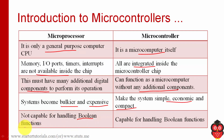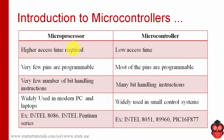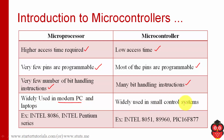Microprocessors are generally not capable of handling Boolean functions, whereas microcontrollers are capable of handling Boolean functions. Since complexity is high, a microprocessor requires more access time, whereas a microcontroller needs less access time. On a microprocessor, very few pins are programmable, whereas on a microcontroller almost all the pins are programmable. The bit-handling instructions available on a microprocessor are very few, whereas on a microcontroller they are more extensive. Microprocessors are generally used in modern-day PCs, laptops, and smartphones, whereas microcontrollers are used in control systems. Famous examples of microprocessors are 8086 and Intel Pentium series; famous examples of microcontrollers are Intel 8051, 81960, and PIC 16F877.